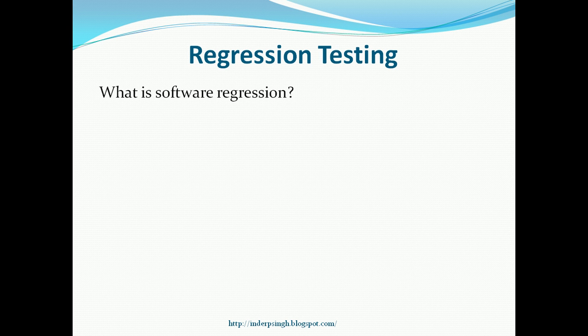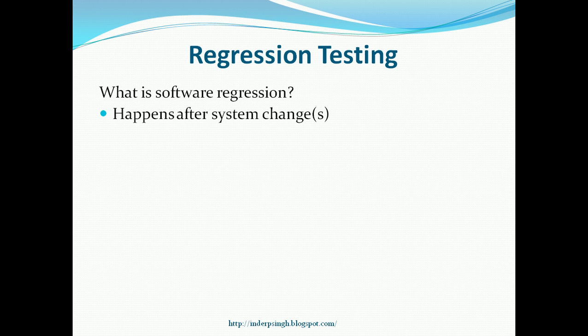What is software regression? Software regression is any unwanted change that happens after changes are made to the system. The system change can involve some software code that is changed in order to implement a new feature or to fix certain defects.